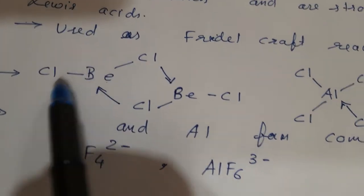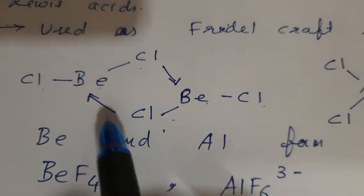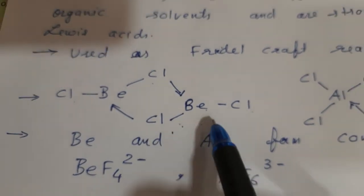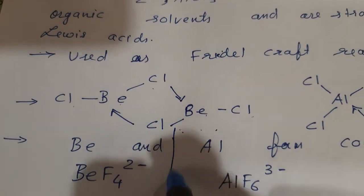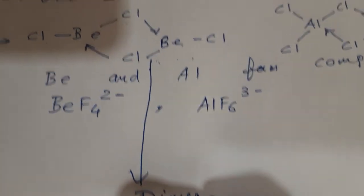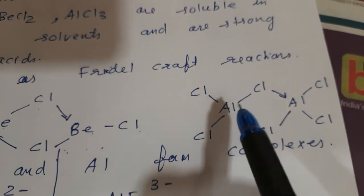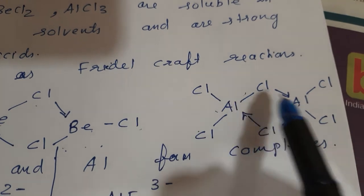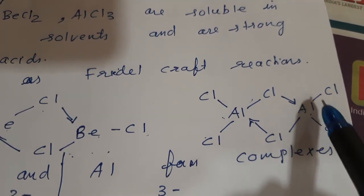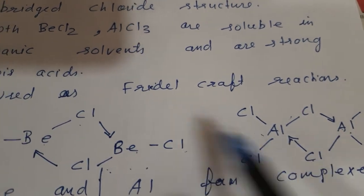BeCl₂ exists as a dimer — two BeCl₂ units joined together. AlCl₃ is also existing as a dimer, two AlCl₃ units joined, with chloride bridges between them.